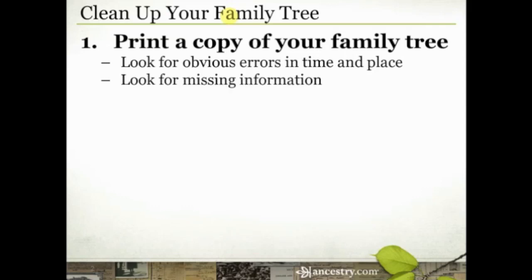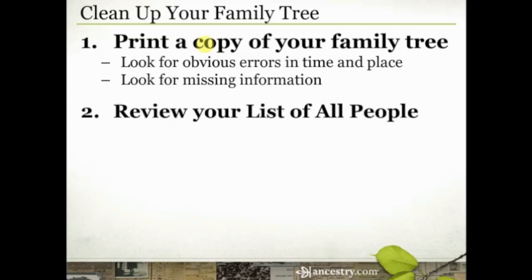Look for missing information. One of the benefits of printing out a family tree is that you can really clearly see where your holes are — where those big gaps are. Sometimes you have that information, you just haven't entered it into your tree. Or maybe you've entered it but haven't connected people correctly. Maybe you unlinked a father and a son and now it looks like that whole branch is empty, when it's not — the people are in your tree, you just need to reconnect them. So print out a tree as another way to look for those obvious errors.